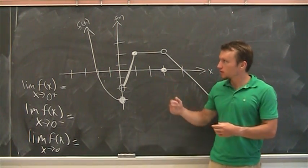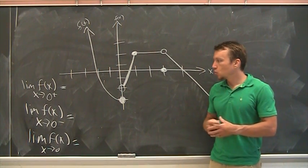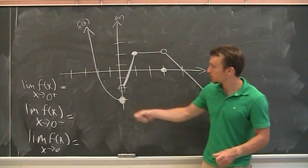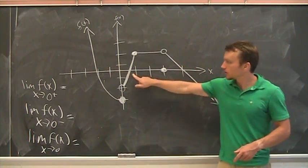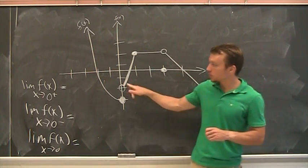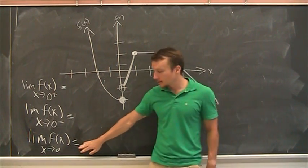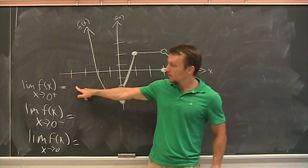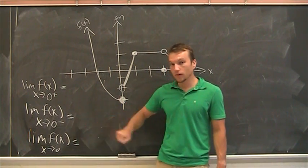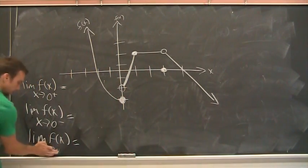So, looking at this graph, I'm going to talk about a few x values that we're interested in and what the limit is as x approaches those particular values — x equals 0, and x equals 1, 2, 3. Let's look at this first point. As x approaches 0, I want to answer three questions: the right-handed limit, the left-handed limit, and the limit itself, as x approaches 0.